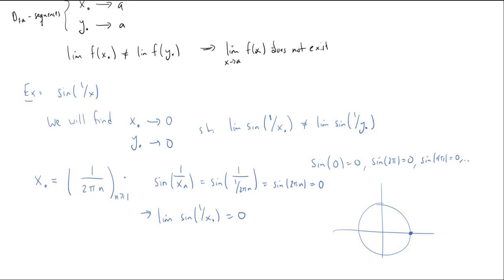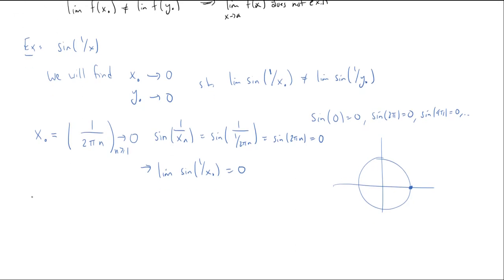OK, so I have a sequence. Of course, we need to know it converges to zero. And of course, it does, because as n goes to infinity, one over two pi n is getting very, very small. This goes to zero.